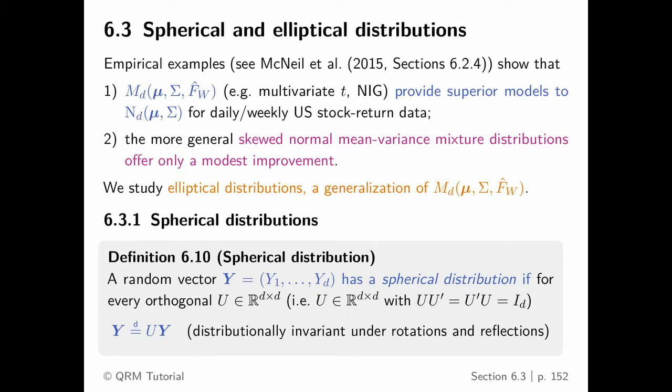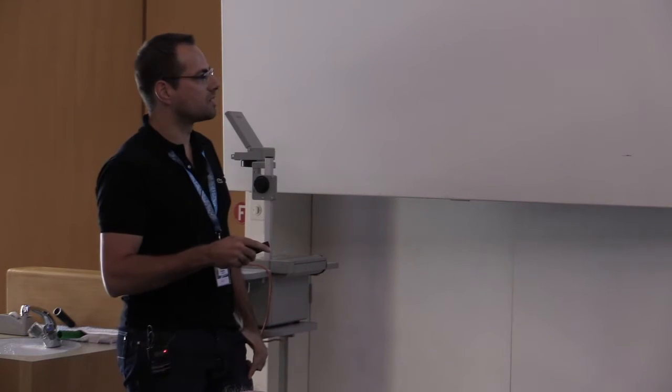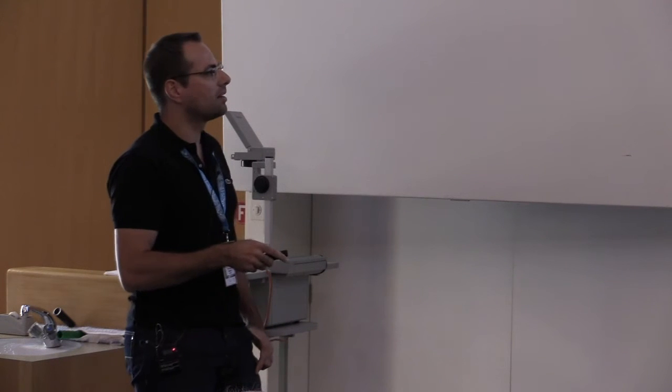What is a spherical distribution? We look at random vectors, not densities. A spherically distributed random vector Y is a random vector that is in distribution equal to a rotated or reflected version of itself — it is essentially invariant distributionally under rotations and reflections.